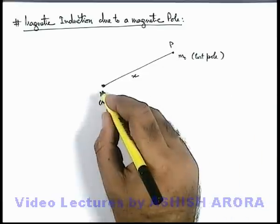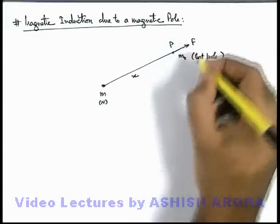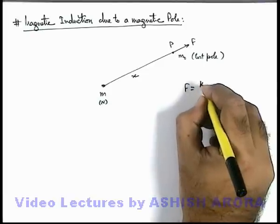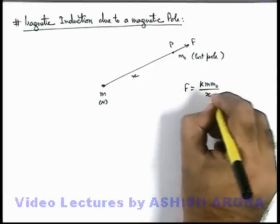Due to this pole, a repulsive force F will act and by Coulomb's law we can write the value of F as km*m₀/x².